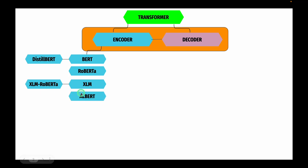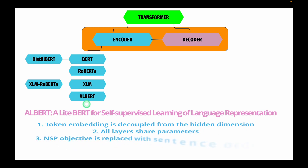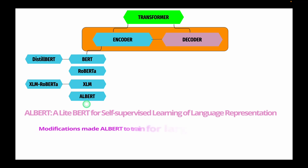The next encoder-only architecture is ALBERT, which is an efficient transformer architecture. Three modifications make ALBERT efficient. First, the token embedding is decoupled from the hidden dimension, making the embedding dimension small especially when vocabulary is large, which helps save model parameters. Second, all layers share parameters, which decreases the total effective parameters. The third modification is that the NSP objective is replaced with Sentence Ordering Prediction, where the model predicts whether the order of two consecutive sequences was swapped. These three changes allow ALBERT to train larger models with fewer parameters efficiently.